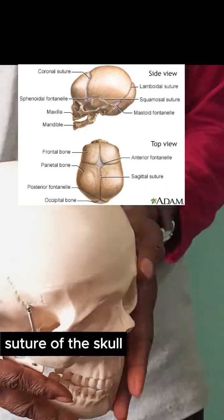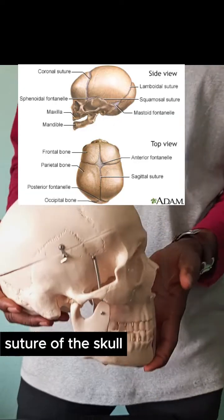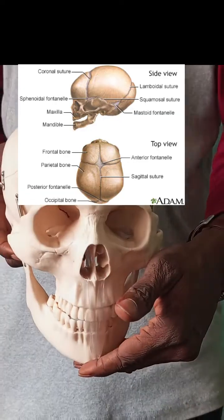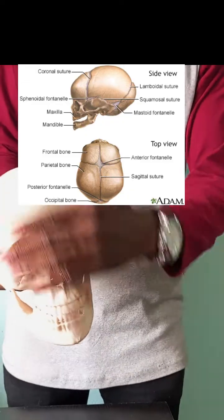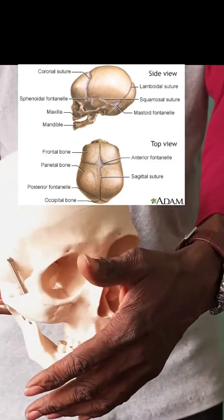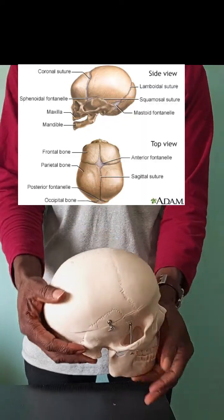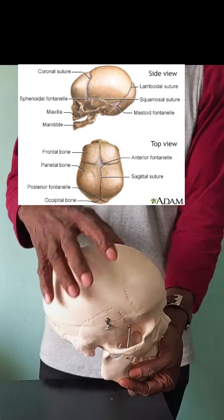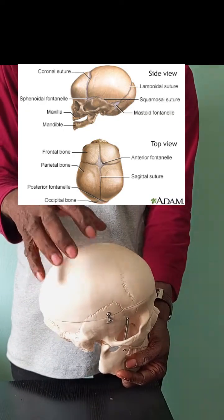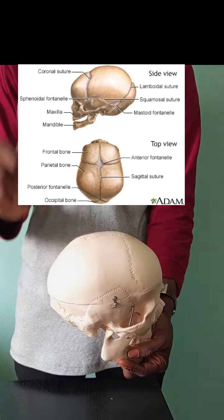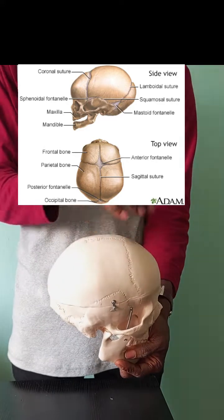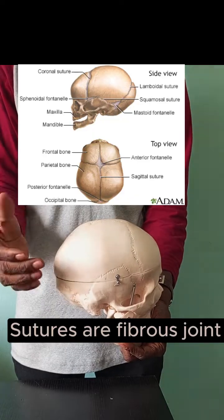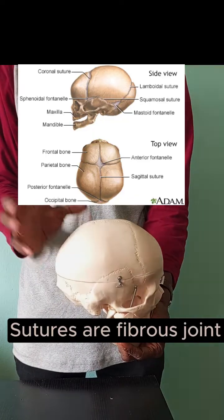Talking about the sutures of the skull. Now you may be asked — you have a skeleton like this — identify this; this is the skull. Being the skull, we have different bones that make up the skull. The part we want to talk about is the sutures of the skull. Now the bones of the skull are flat, irregular short bones. However, they are held together by what we call sutures. Sutures are fibrous joints that hold the bones of the skull together.